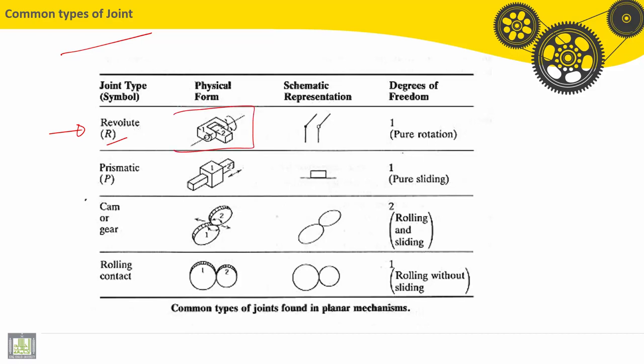Here we have an example, so part number one or link number one makes a rotation about the link number two. So schematic representation, it is this one. We make here a point or small circle. This is the joint. And number degree of freedom, it is one degree of freedom, pure rotation.